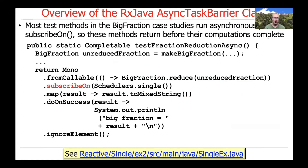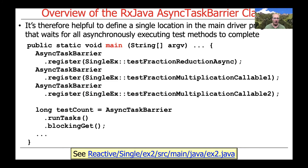In the RxJava case studies, all those big fraction case studies run their methods asynchronously, largely using the subscribe-on method. These methods return before the computation is complete — that's one of the wonderful features of asynchronous processing with reactive streams in RxJava. Therefore, as with Project Reactor, it's very helpful to have a single place to wait for many asynchronous computations to complete — essentially a barrier synchronizer that waits until all computations are done.